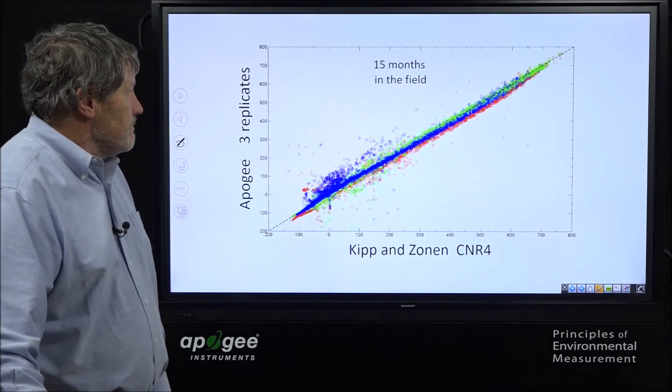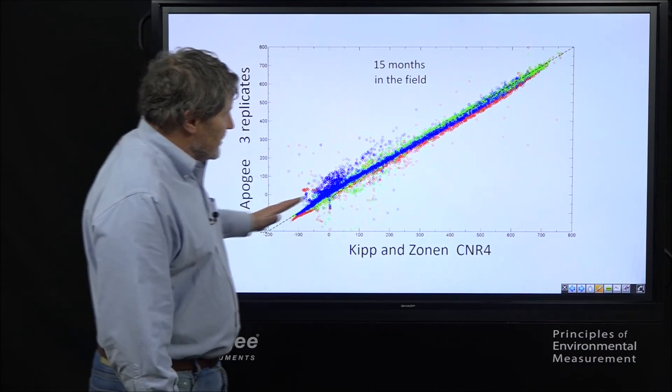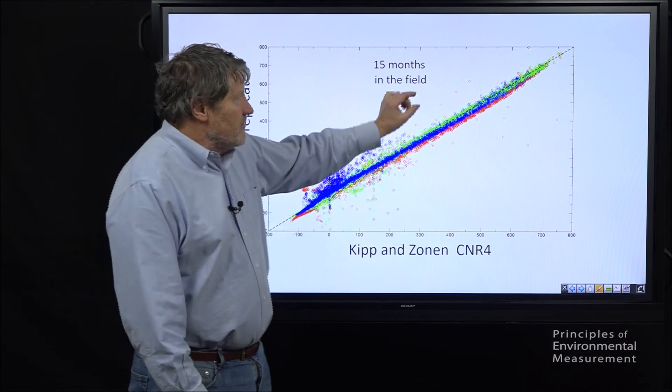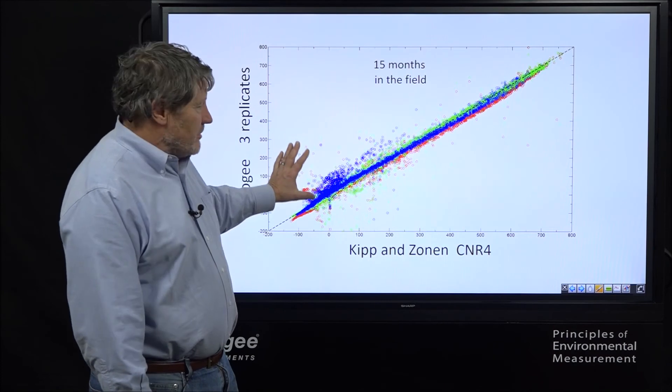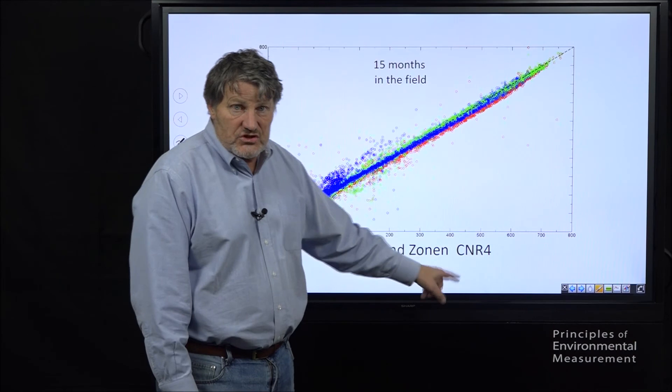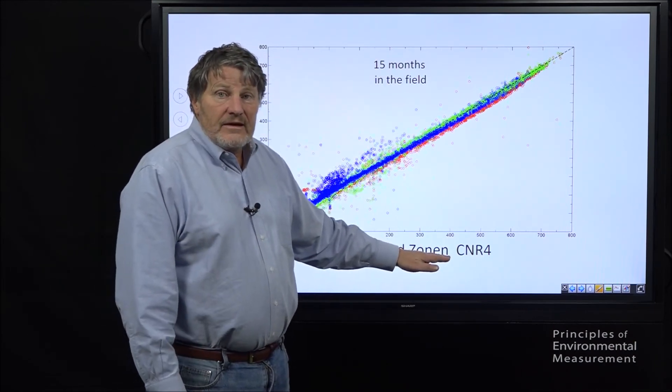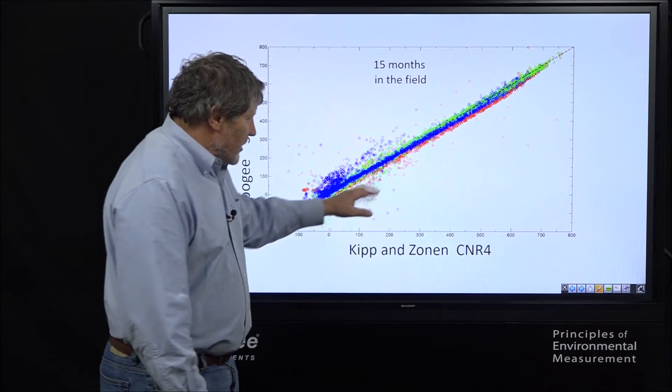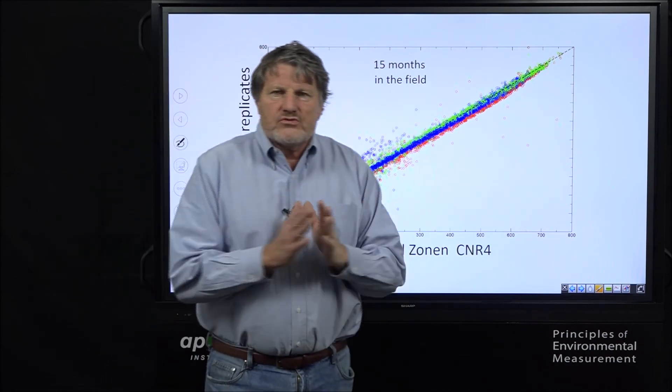here's the data. Here's the Kip and Zonen. Here's the Apogee, 15 months in the field. All of them track the Kip and Zonen very accurately. There's a few scattered points in here. And this is because something got on the sensor. Sometimes it got on the reference sensor and caused problems. This was not heated. This didn't have the heated shield. So, there are times when this had an error. But the point of this is we're very pleased with this accuracy.